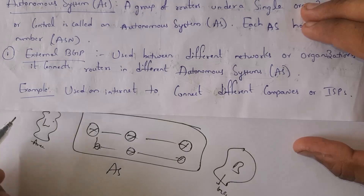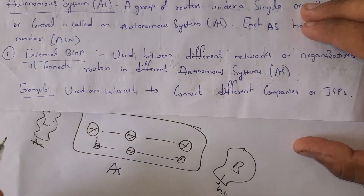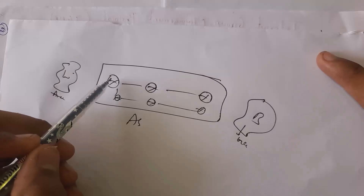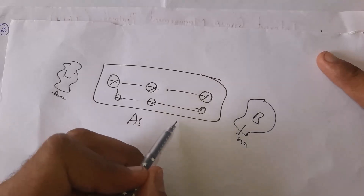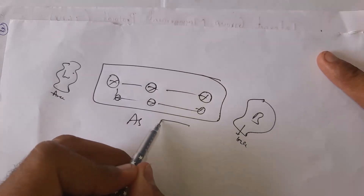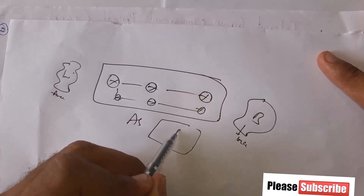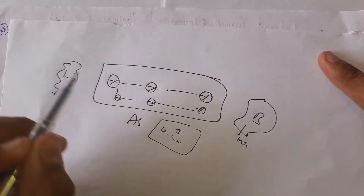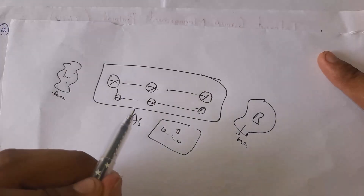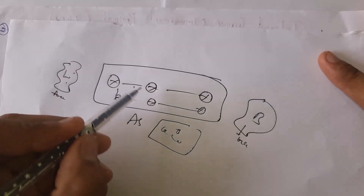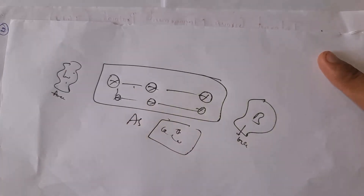There is not only a single autonomous system — there can be many autonomous systems. So two networks will communicate to each other by passing through various autonomous systems. This is the meaning of external BGP.